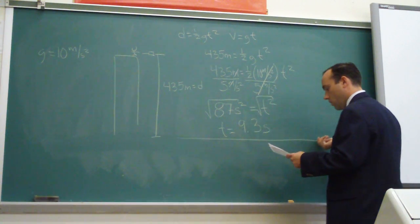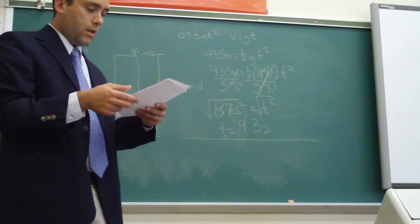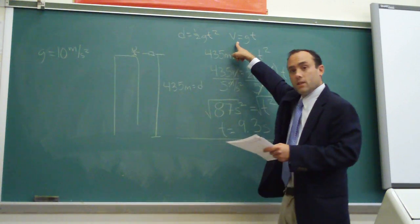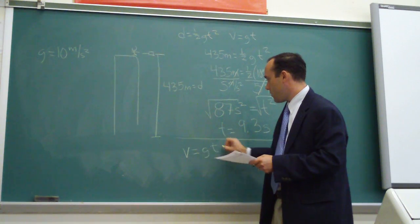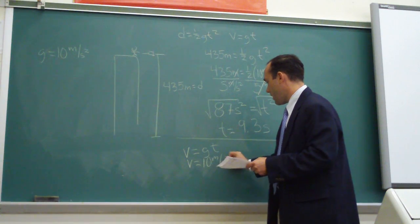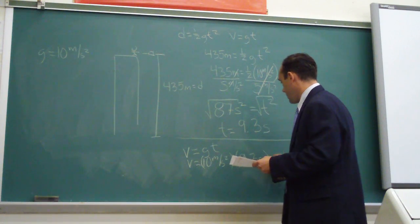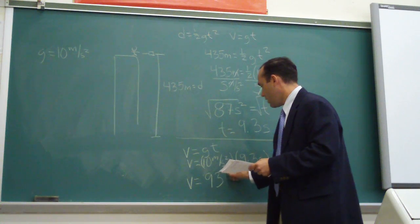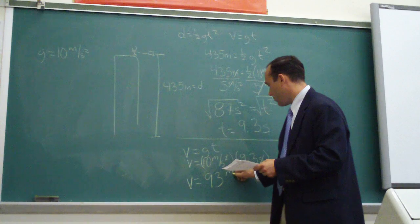That's the first answer — how long it takes for the hammer to fall: 9.3 seconds. The second part of the question asks what speed it will hit the pavement. You plug into the equation v = gt. Velocity equals 10 meters per second squared times 9.3 seconds. Multiplying these together gives a velocity of 93 meters per second.